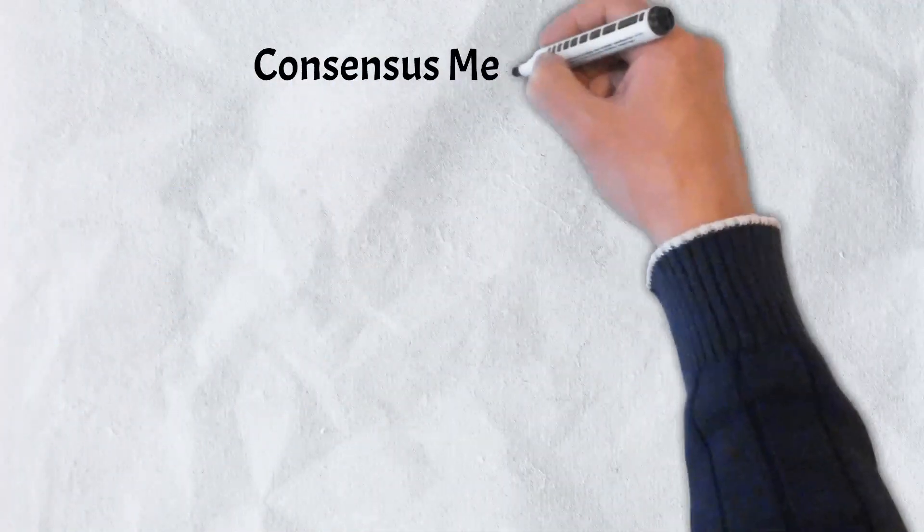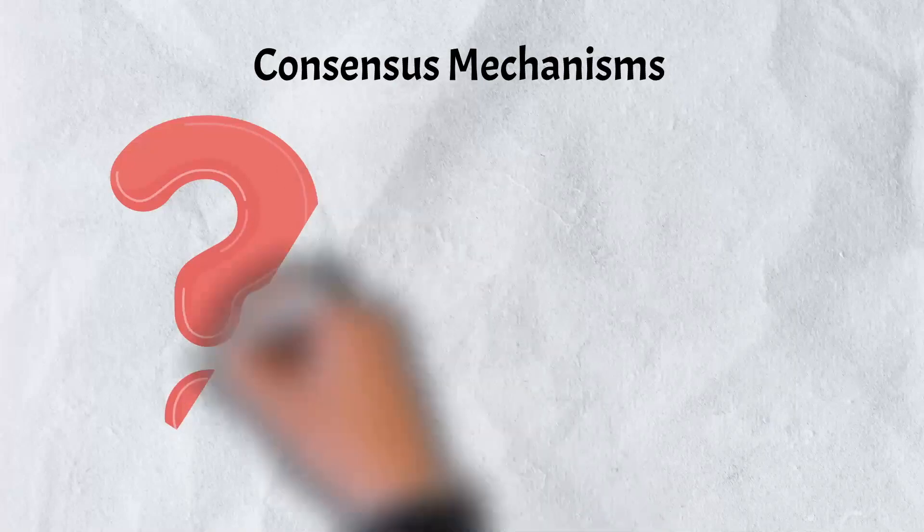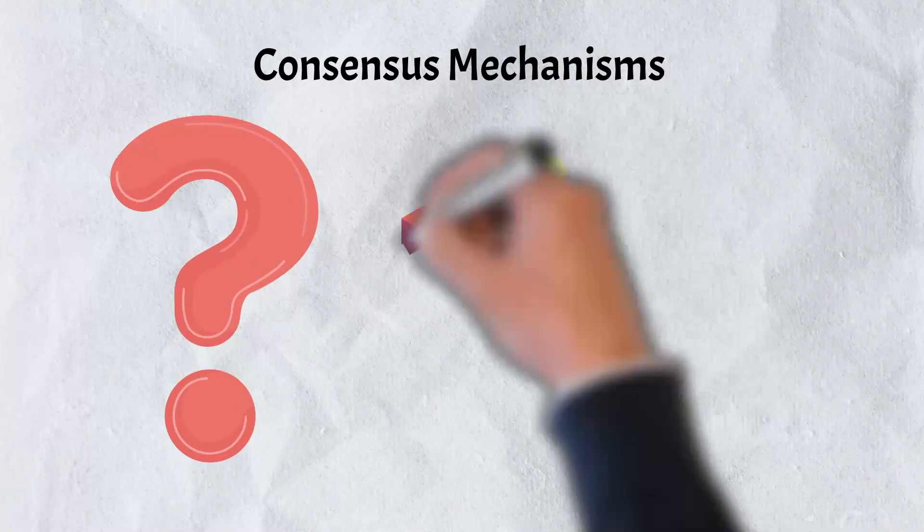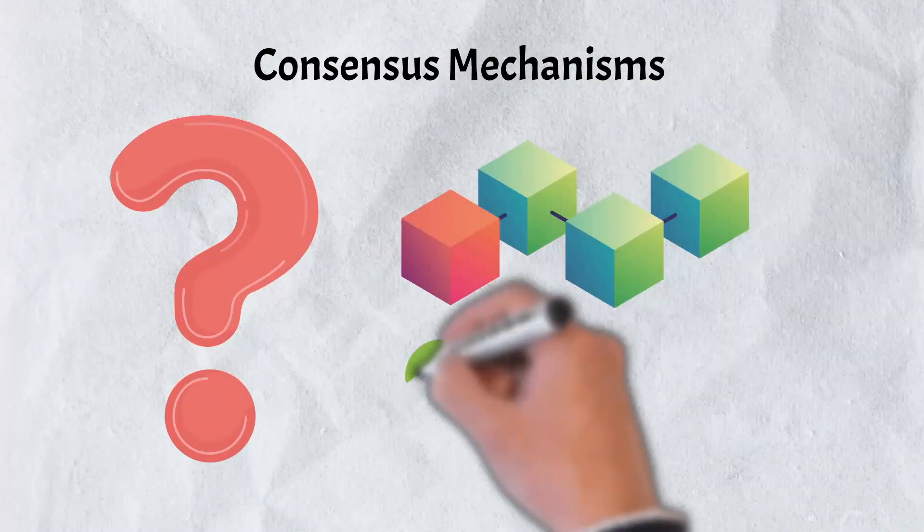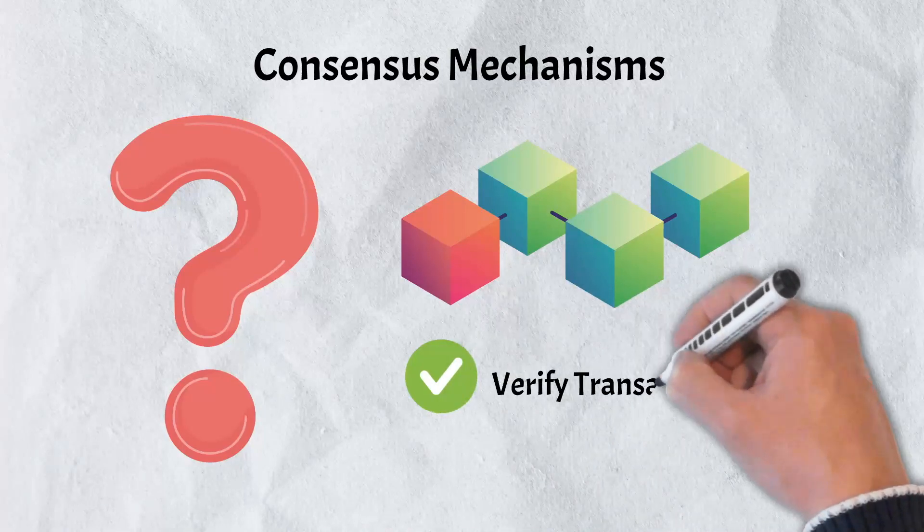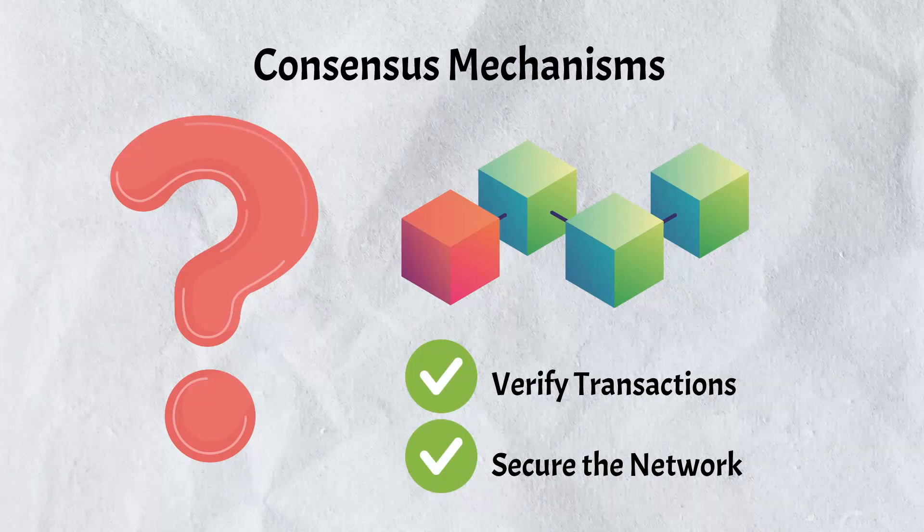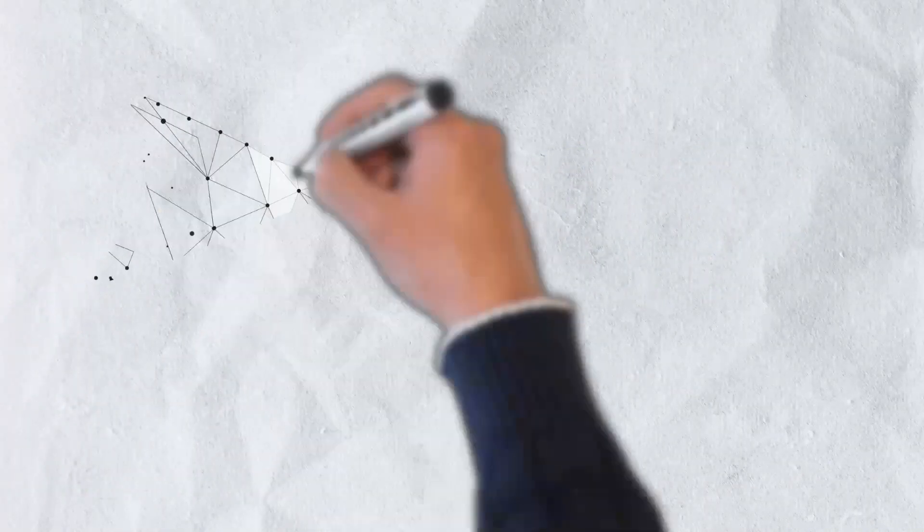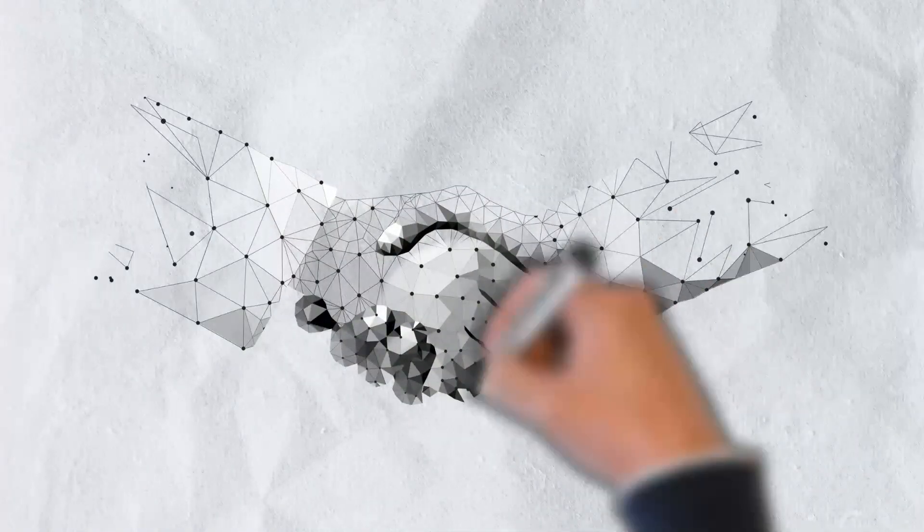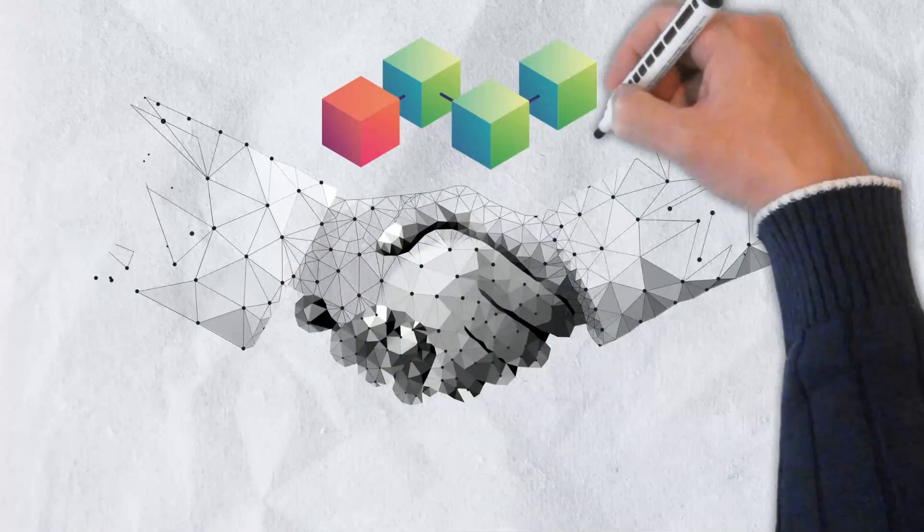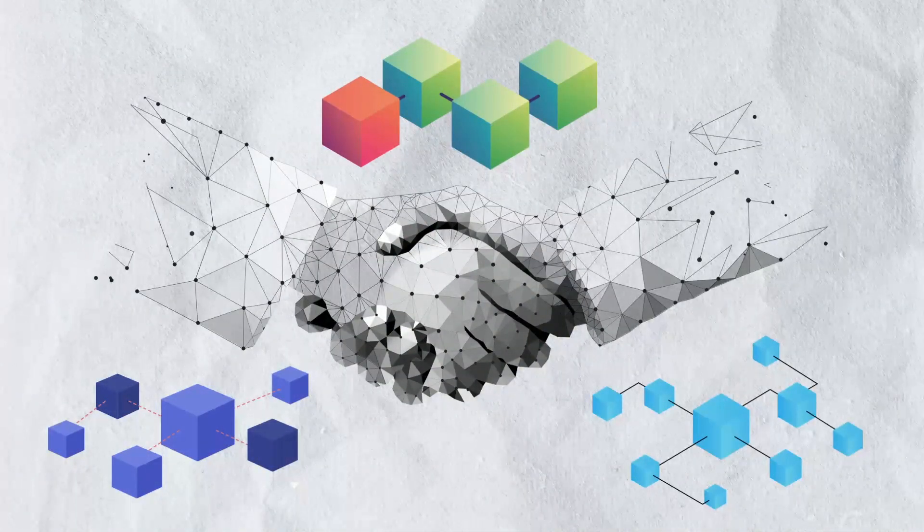So, to start off, what exactly is a consensus mechanism and what is it used for? Simply put, a consensus mechanism is a system that is used to verify transactions and maintain the security of a blockchain network. On decentralized networks, consensus mechanisms provide a way to come to an agreement on a single state of the network or single data value.